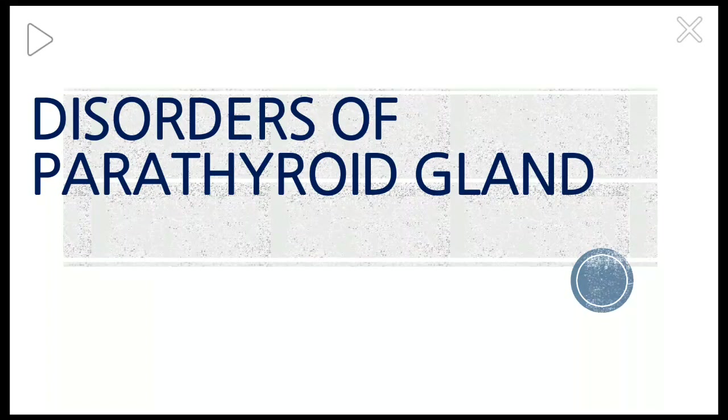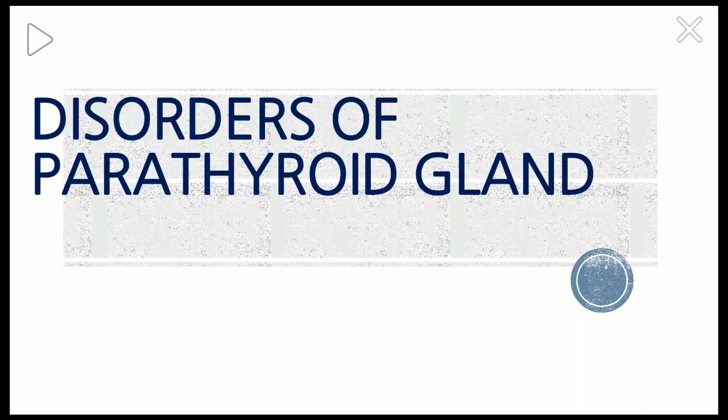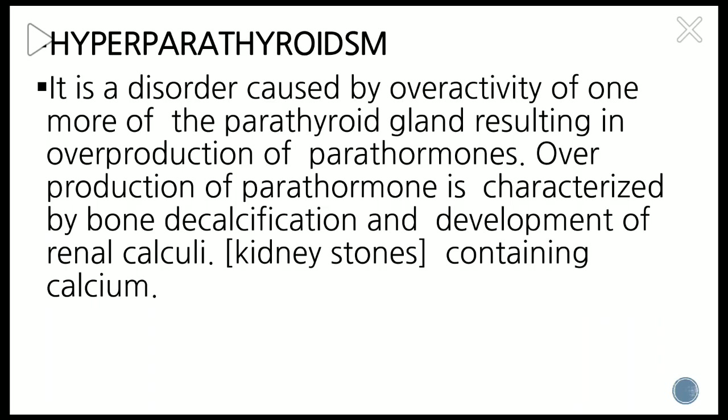The next gland in the endocrine system is the parathyroid gland. The parathyroid gland is located just behind or just below the thyroid gland. These glands are very small. We are not going to deal with anatomy and histology — we are going to deal only with the disorders of the parathyroid gland.